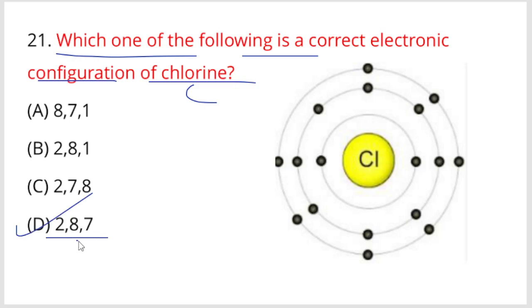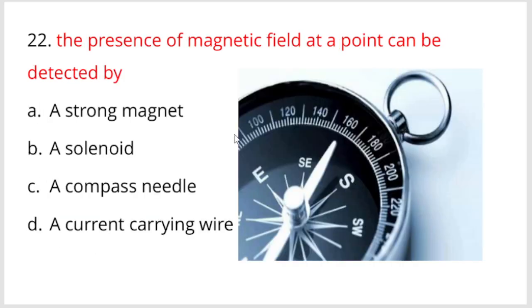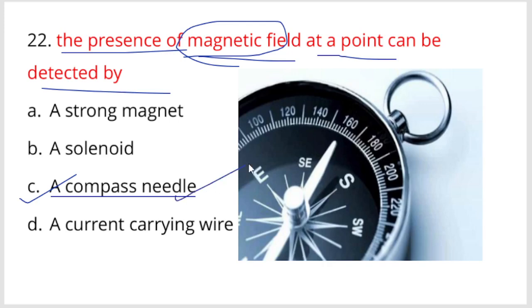Next, the presence of magnetic field at a point can be detected by compass needle. Option is the right answer.